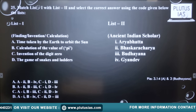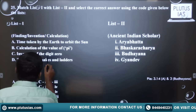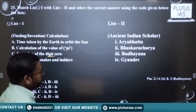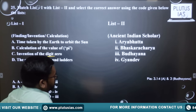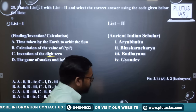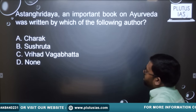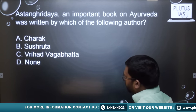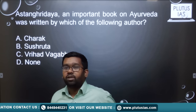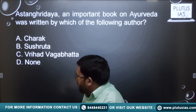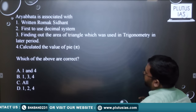The items in List 1 are: time taken by the earth to orbit the sun, calculation of the value of pi, invention of the digit zero, and the game of snakes and ladders. The ancient scholars listed are Aryabhata, Bhaskaracharya who is also known as Bhaskar I, Baudhayana, and Gyandev. There is also a question on Ashtangahridaya, an important book of Ayurveda — was it written by Charaka, Sushruta, Brihat Vagbhata, or none of the above?